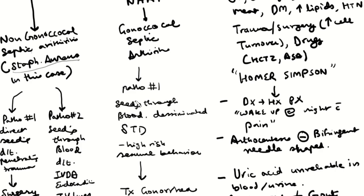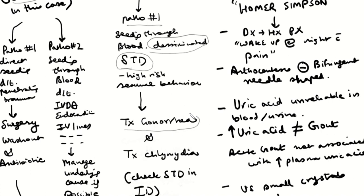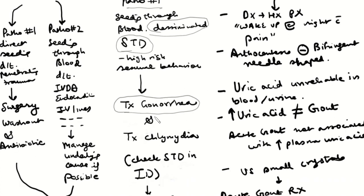How do you treat gonococcal septic arthritis? The pathology involves hematogenous seeding — the person engages in high-risk sexual behavior, acquires the STD, which disseminates through the blood into the joint. The patient will have a history of high-risk sexual behavior. Treatment is ceftriaxone — at the time of this lecture, it is the drug of choice per guidelines.